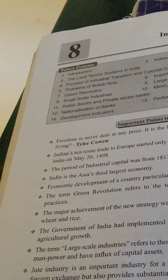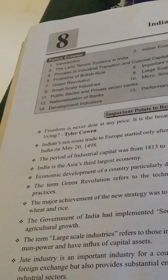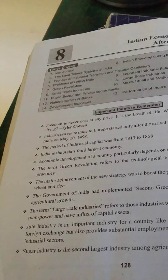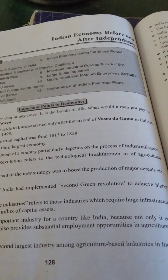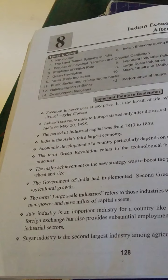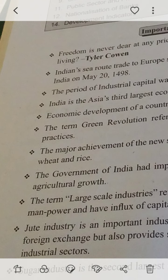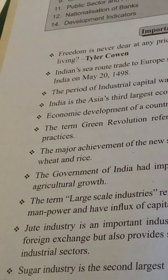The term Green Revolution refers to the technological breakthrough in agricultural practices — that is agricultural technological breakthrough. The major achievement of the new strategy was to boost the production of major cereals, that is wheat and rice, which had very limited production before. After the Green Revolution, wheat and rice production became very high, with new seeds and new types of irrigation.